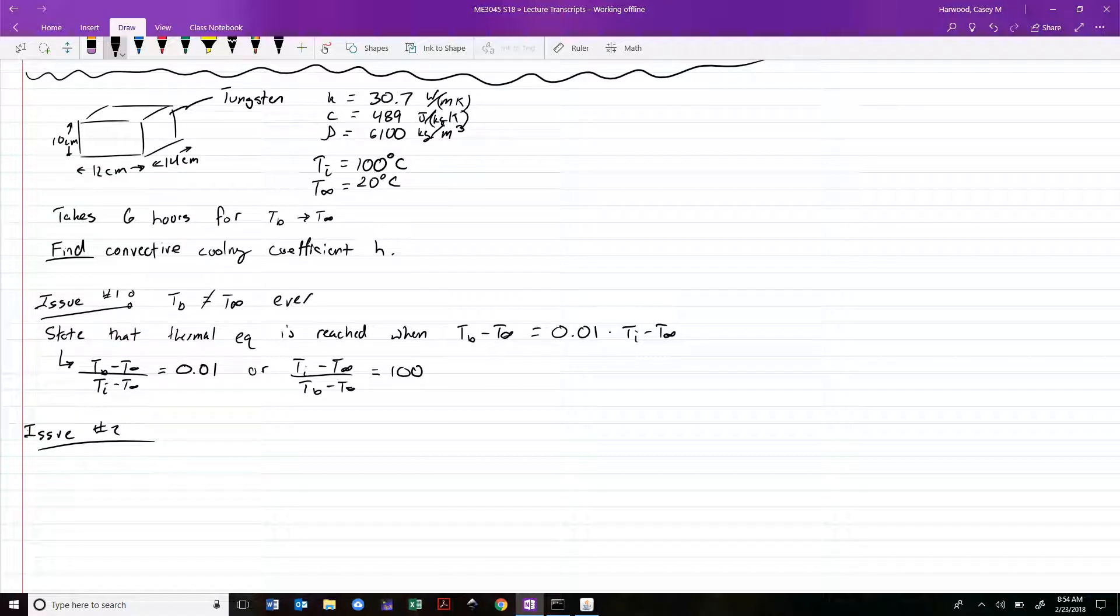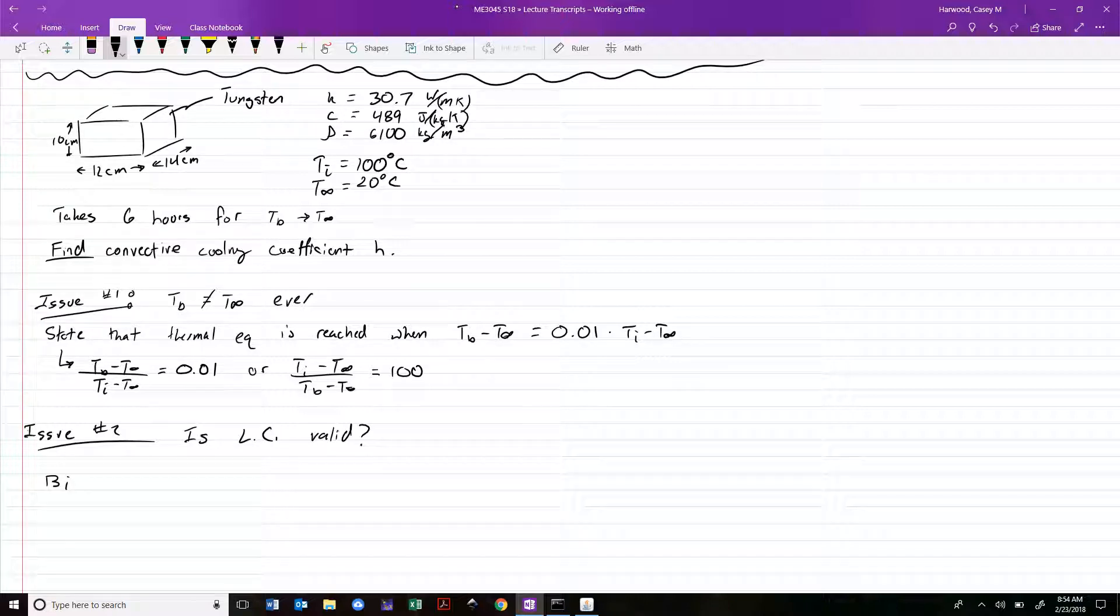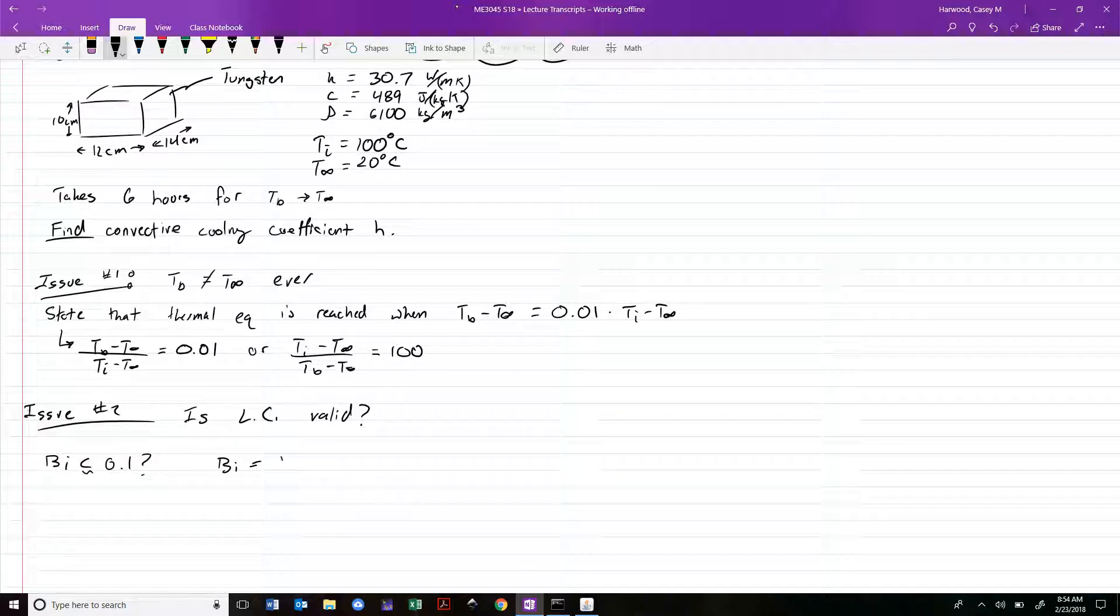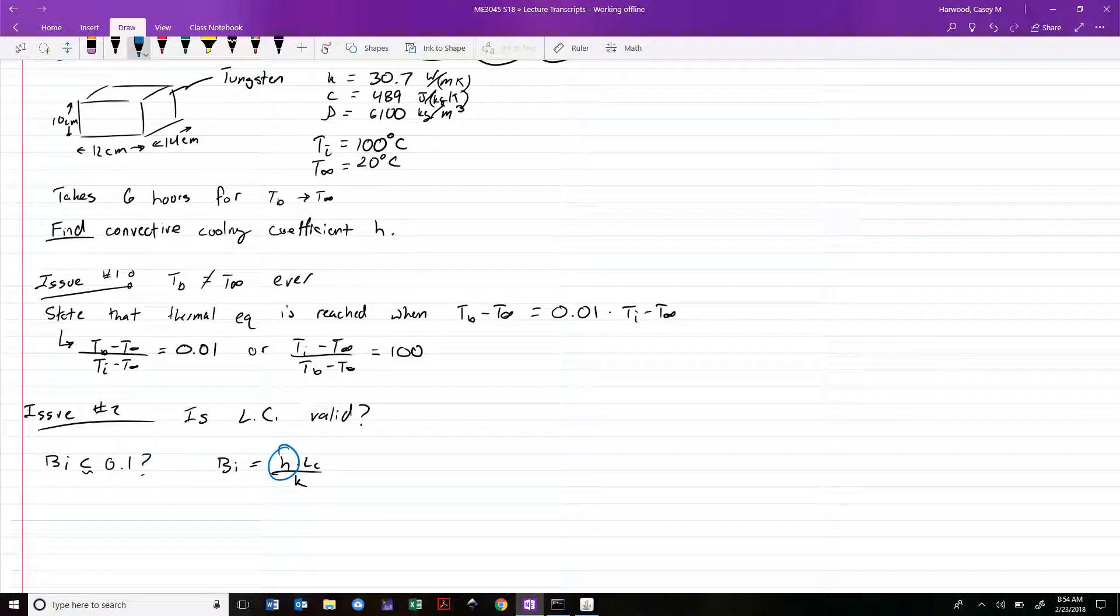Issue number two: we don't know that lumped capacitance is actually valid yet. Ordinarily we would check the Biot number - is BI less than approximately 0.1? The problem is that the Biot number equals H times LC over K and we don't know H. That's what we're trying to solve. This is an example where before we solve the problem, we don't know whether our solution will be valid. We're going to have to find a candidate value of H and then go back and check that the way we did it was actually correct. It's a two-stage solution.